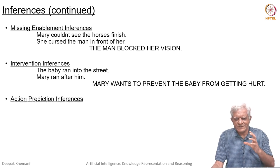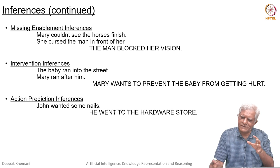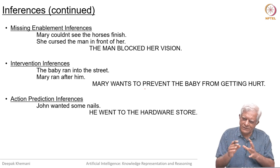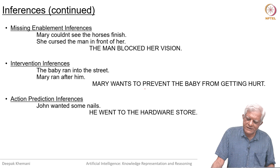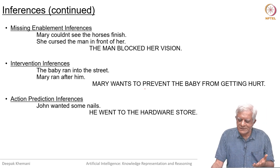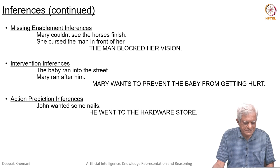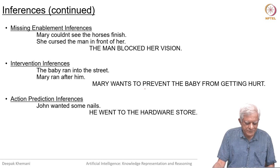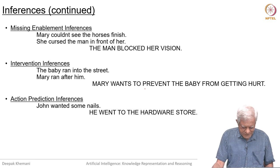You can see that the system can generate answers only if you have a certain amount of world knowledge about everyday actions, which is what CD theory is about, to understand what is really happening. John wanted some nails, he went to the hardware store.